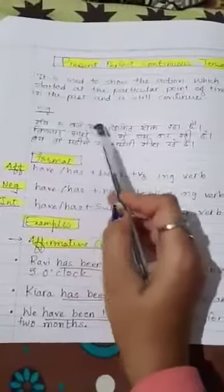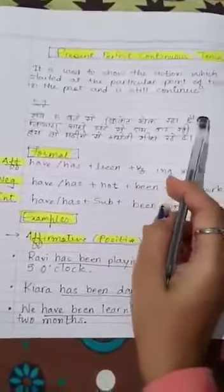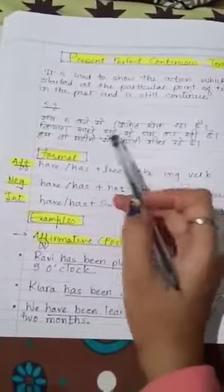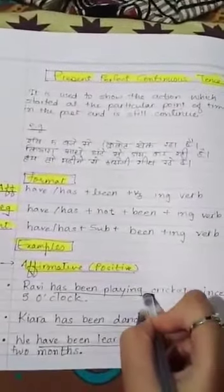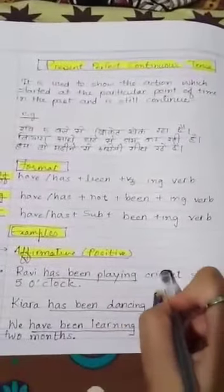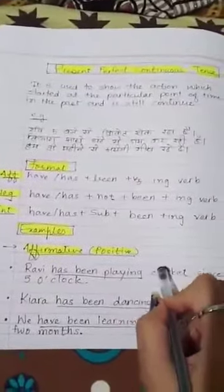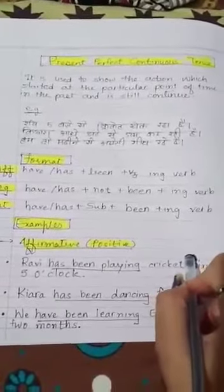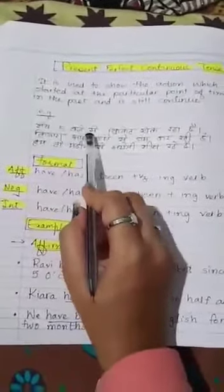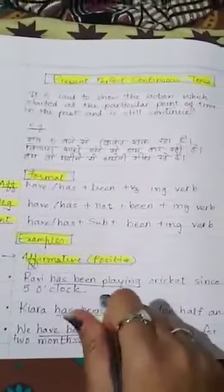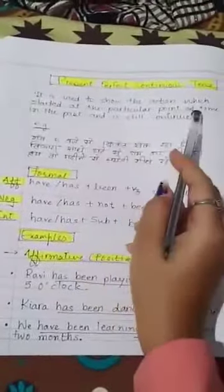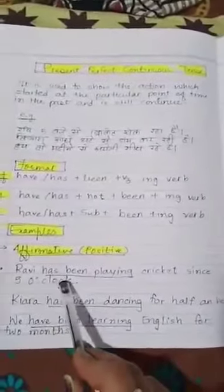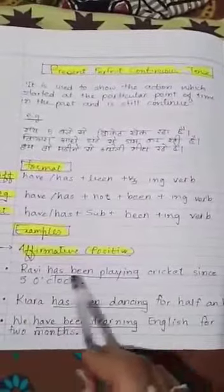We have seen that Ravi started playing cricket at 5 o'clock. If I want to say this in English, then the sentence would be: 'Ravi has been playing cricket since 5 o'clock.' You might be tempted to say 'Ravi is playing cricket' — but that would be present continuous tense. Here, because he started at 5 o'clock — a past point of time — we use present perfect continuous tense: 'Ravi has been playing cricket since 5 o'clock.'